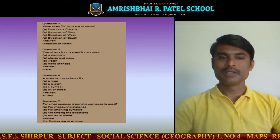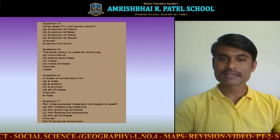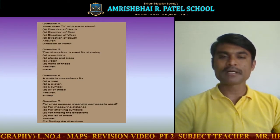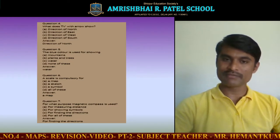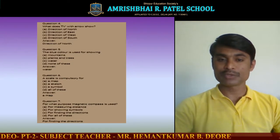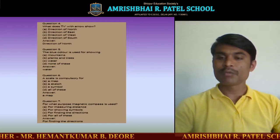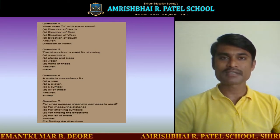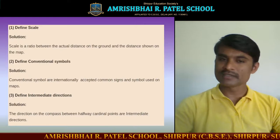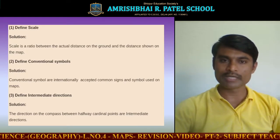Question number five: the blue color is used for showing water on a map. Question number six: a scale is compulsory for a map. Question number seven: for what purpose is a magnetic compass used? A magnetic compass is used for finding directions, because the magnet aligns in the north direction.